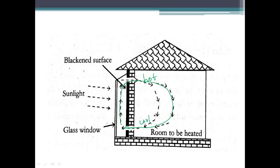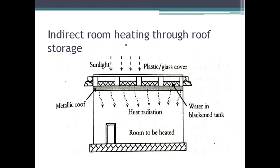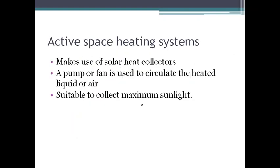In the passive system, we can also have an indirect setup where heating is made through roof storage. In this setup, a small amount of water is stored in blackened metallic containers at the top of the room. These containers absorb sunlight all through the day, getting heated up, and then slowly release energy into the room throughout the day. Even after the sun sets, the water is still hot and can continue releasing energy into the room. This design is ideal for flat roofs with metallic toppings.